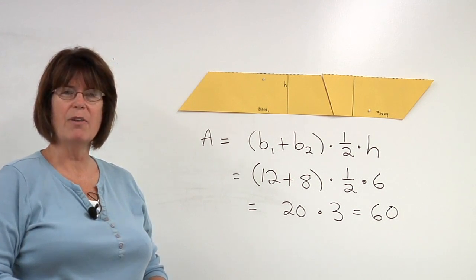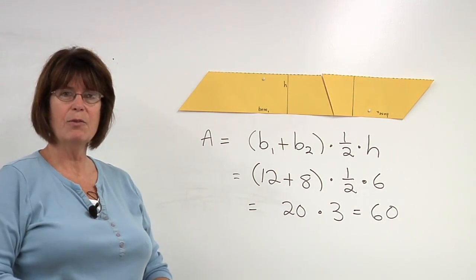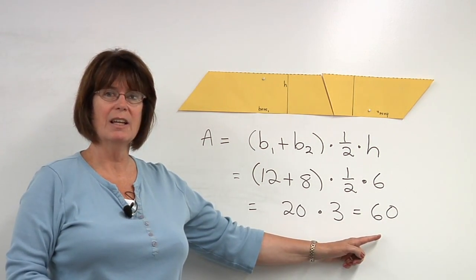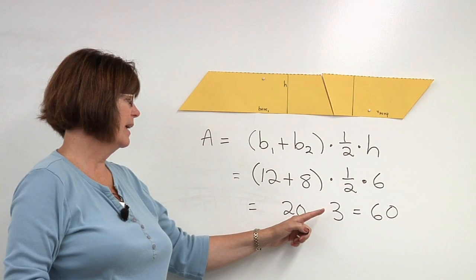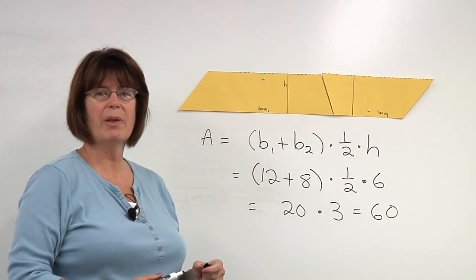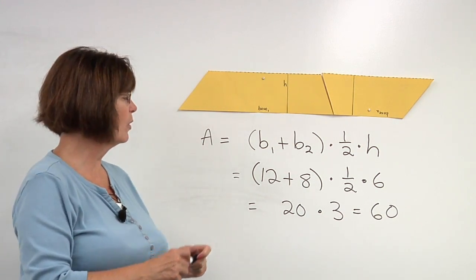But we wanted to know how to find the height. If you want to find the height, you need to work backwards from the area, 60, divide by the two bases and multiply by 2. So we're going to just work backwards.